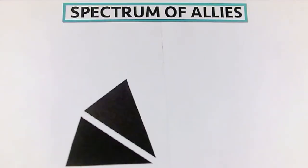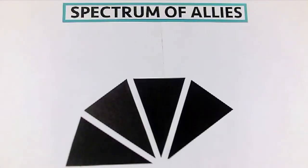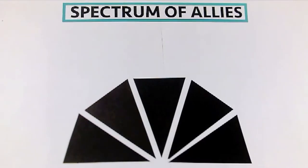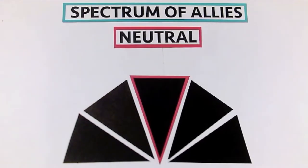The third is neutral. They might not have information about the subject, or they might have opposing loyalties that can keep them in the middle.